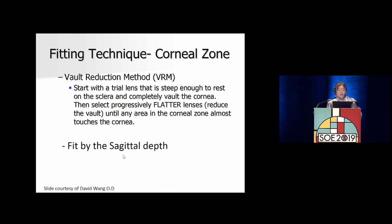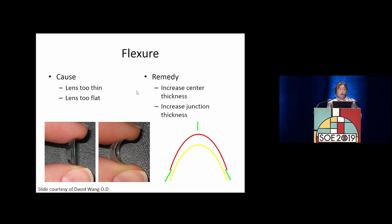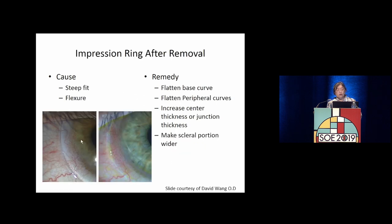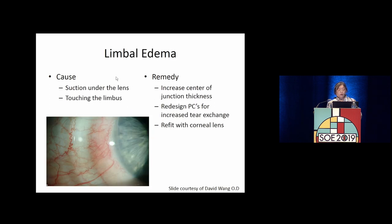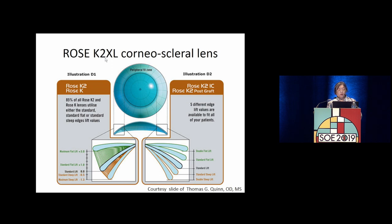Scleral lens fitting starts with a trial lens steep enough to rest on the sclera and completely vault the cornea, then progressively flattened until there is just minor corneal touch. If too steeply fitted, conjunctival edema and vessel blanching occur. Limbal edema and difficult lens removal can result, remedied by increasing the central junction thickness. The Rose K XL corneo-scleral lens offers five edge lift options, and can even be customized with a notch around a glaucoma bleb.